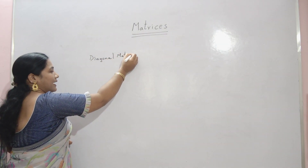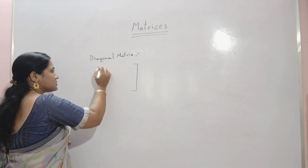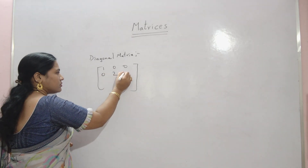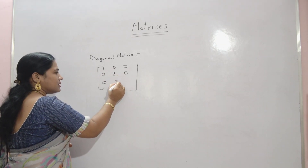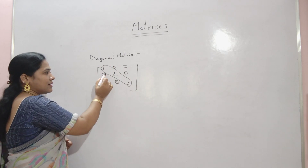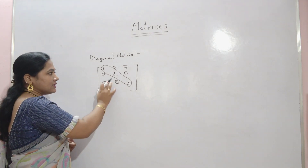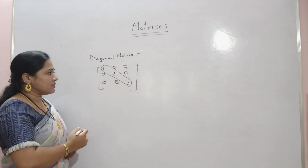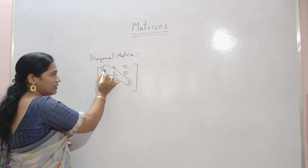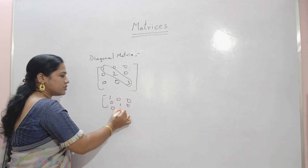The next matrix is the diagonal matrix. In a diagonal matrix, if you take a matrix like [1, 0, 0; 0, 2, 0; 0, 0, 3], what you observe is that except the diagonal, the remaining elements are 0. If in any matrix, except the diagonal, the remaining elements are 0, then the matrix is called a diagonal matrix. Suppose in the diagonal only 1s are there — [1, 0, 0; 0, 1, 0; 0, 0, 1] — this type of matrix is called a unit matrix.